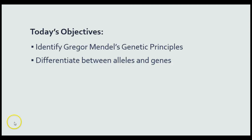So today's objectives were to identify some of Gregor Mendel's genetic principles — we looked at the principle of dominance and biological inheritance, the way traits are passed from parents to offspring. We also took time to differentiate between alleles and genes: genes are the chemical makeup of a characteristic, and alleles are the different variations of that gene. If you have any questions, please bring them to class tomorrow.